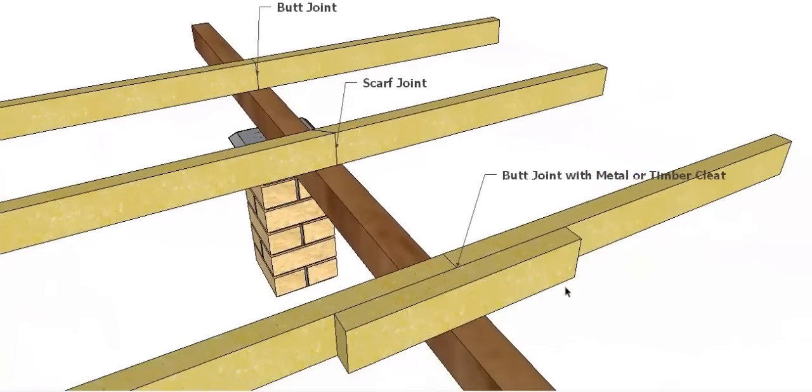You can use a butt joint with a metal or timber cleat, so a gang nail or a timber cleat on the side.